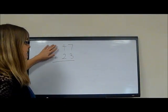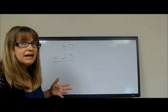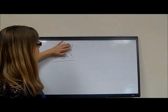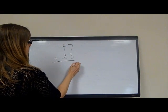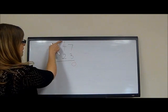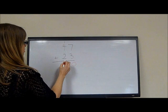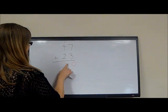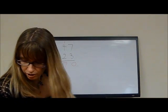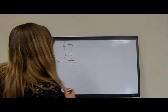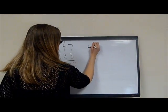We have 47 plus 23. Now yes, I know that we would normally take the 7 plus 3, make a 10 and carry the 1, and then add 1 plus 4 plus 2 to get 7.